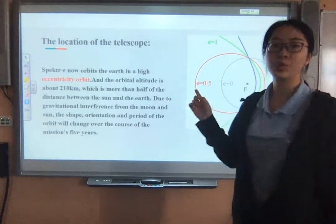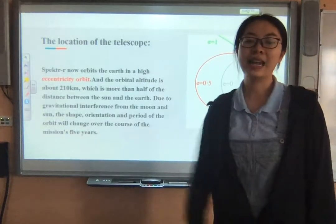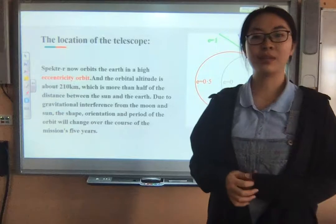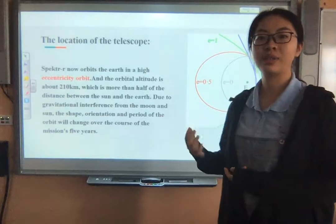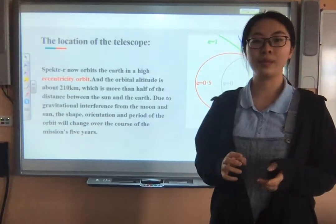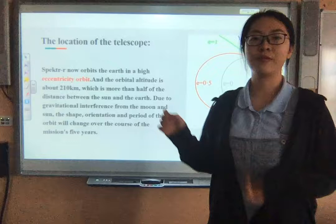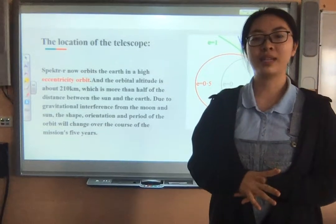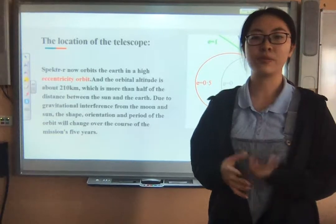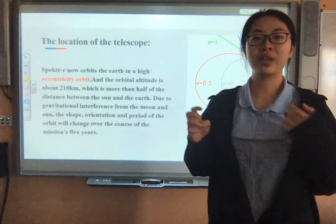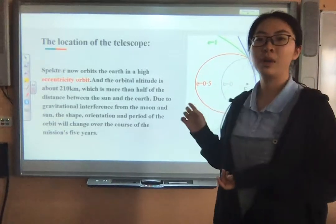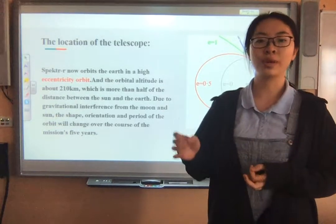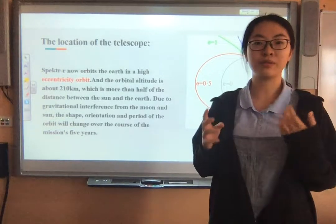As e equals one, it is a parabola, and as e is greater than one, it is hyperbolic. The object's altitude is about 210,000 kilometers, which is more than half of the distance between the sun and the Earth. Due to gravitational interference from the moon and the sun, the shape, orientation, and period of the orbit will change over the course of the mission, which is about five years.